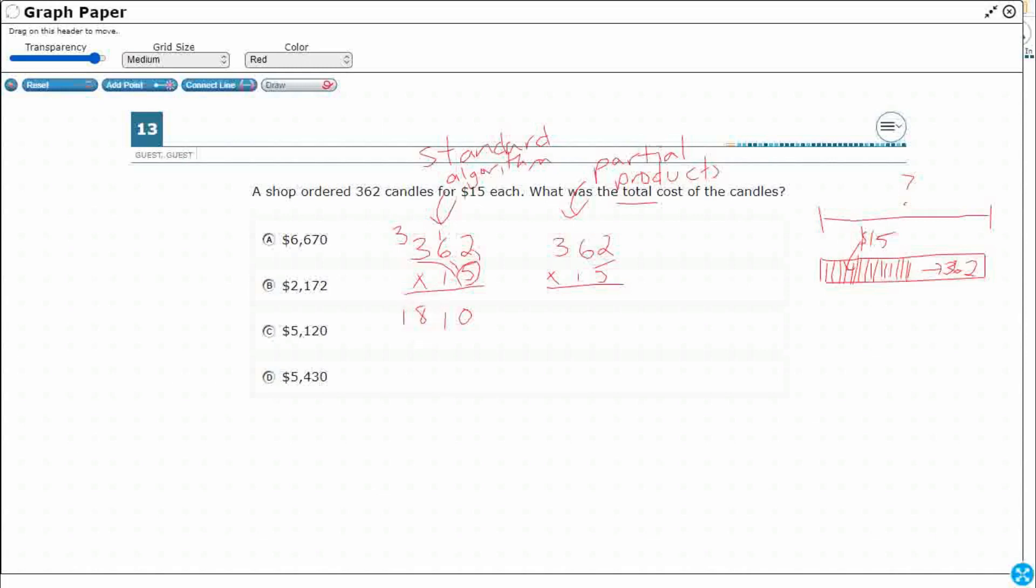Now watch what it looks like on partial products. What I'm going to do is I'm going to really break this number into place value and multiply that five by each place value. So five times two is 10. I'm going to just draw them on their own rows. Five times 60. Well, five times six is 30, so add that zero is going to be 300.